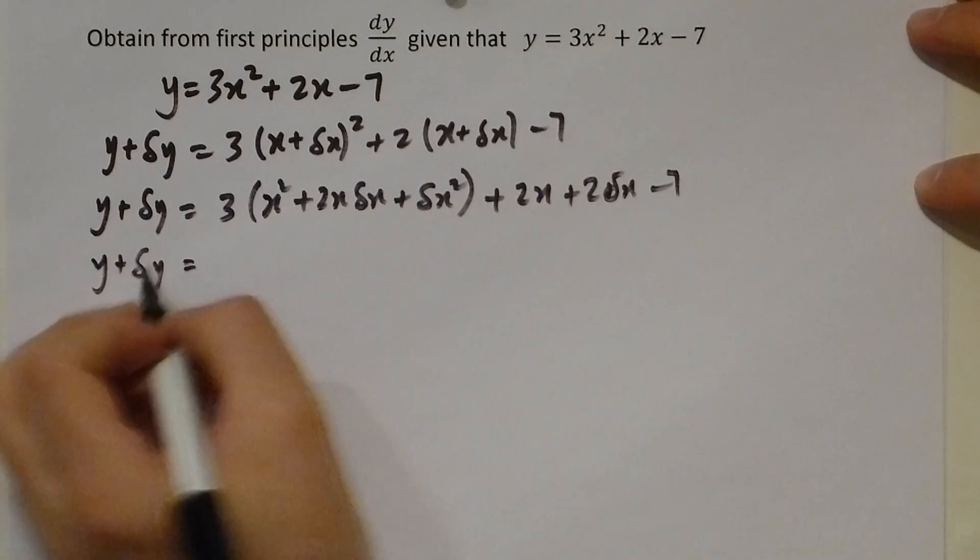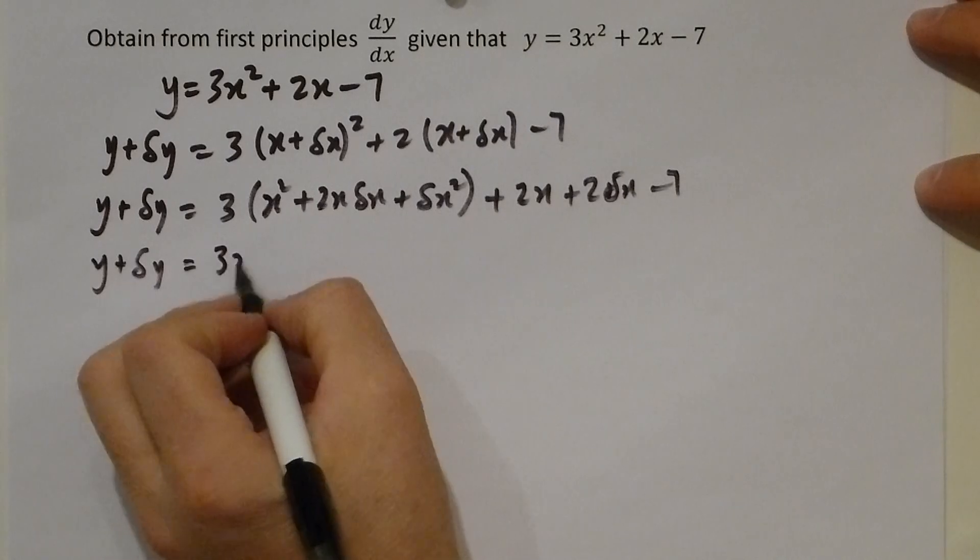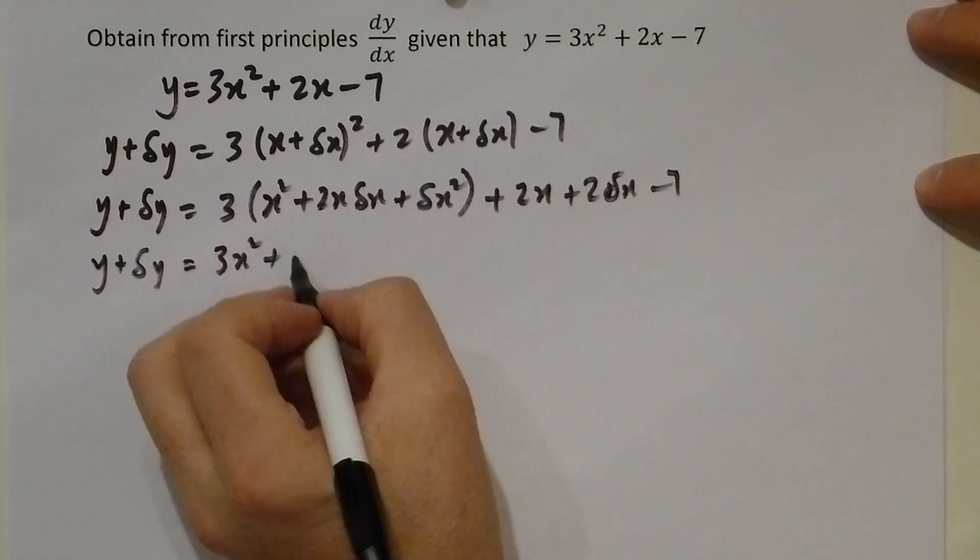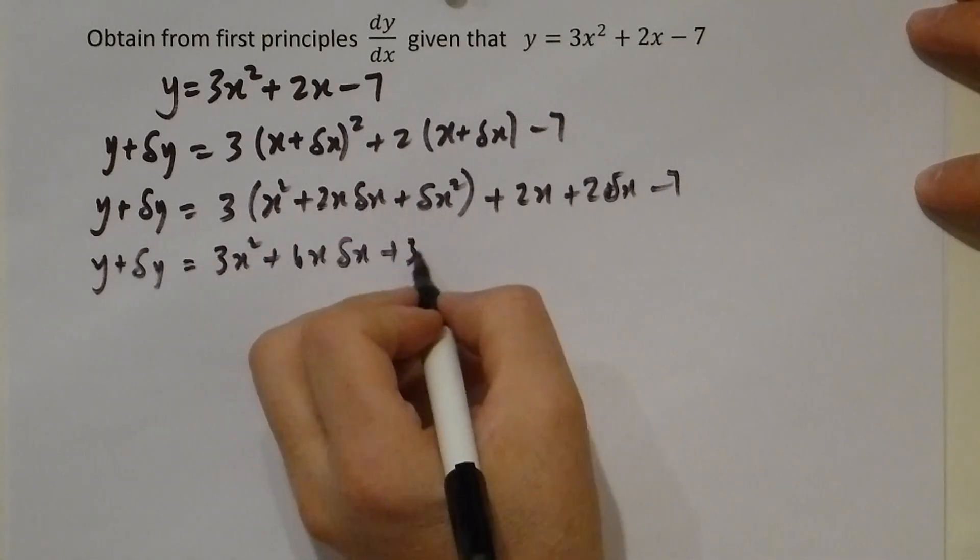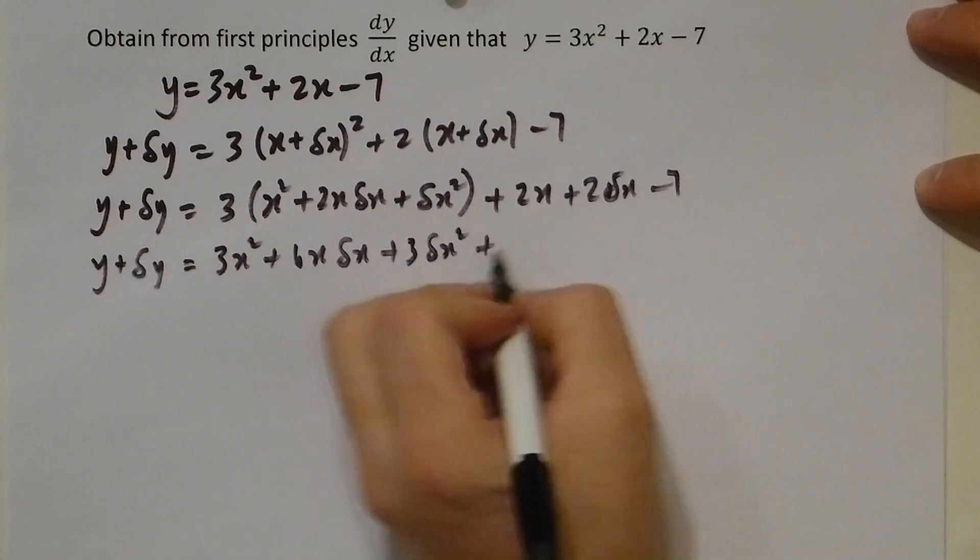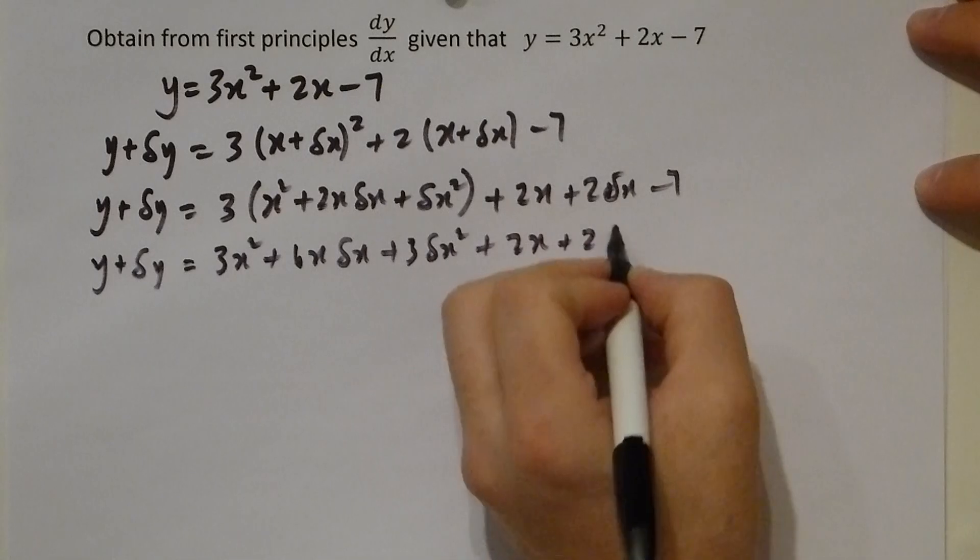Furthermore, we remove the bracket completely: 3x squared plus 6x delta x plus 3 delta x squared, and the rest as it was in the line above.